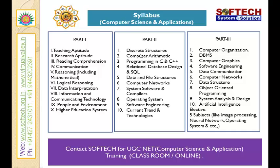Part 2 and Part 3 are based on their specialization. For Computer Science and Applications, it will be computer-oriented. Part 2 includes subjects such as discrete structures, computer arithmetic, programming in C and C++, relational database design, SQL, data and file structures, computer networks, system software and compilers, operating systems, software engineering, and current trends and technologies.